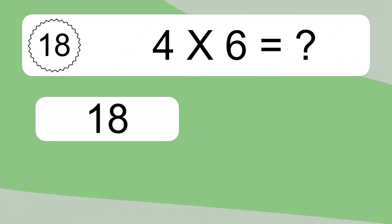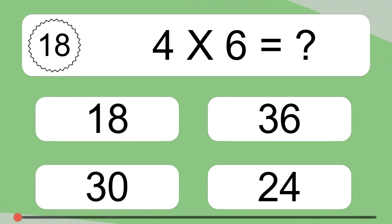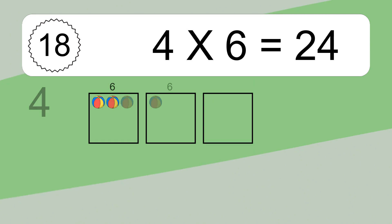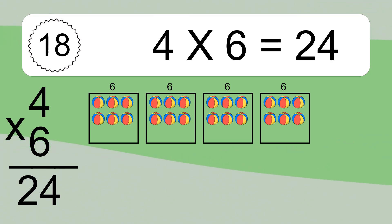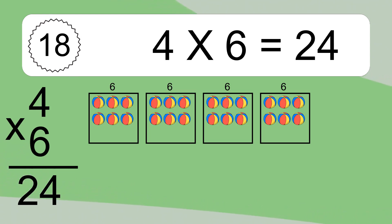4 times 6 equals what? 4 times 6 equals 24. We have 4 boxes, and each box has 6 colorful balls inside. If you count all the balls in all the boxes together, you will have 4 times 6 balls. This equals 24 balls.